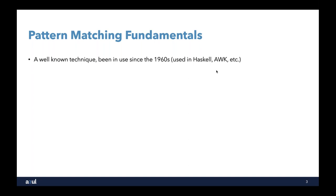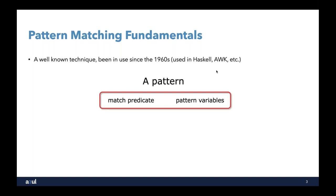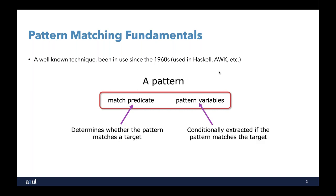The concept of pattern matching has been around for a long time. It's a well-known technique used in many different programming languages — you can trace it all the way back to the 1960s. Languages like Haskell, or even Awk, use pattern matching. What do we mean by pattern matching? A pattern consists of two distinct things: a match predicate, which gives us a way of determining whether we have a target that matches a given pattern — evaluating to a Boolean, either true or false — and one or more pattern variables, which are conditionally extracted based on the predicate. If the pattern matches, variables will be extracted and made available for us to use in our code.